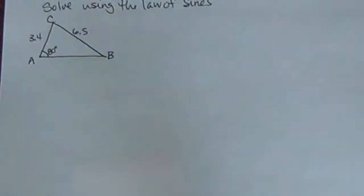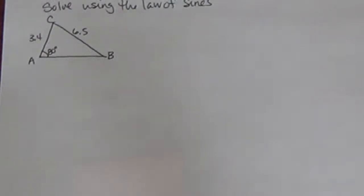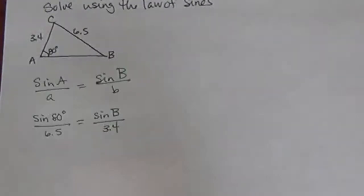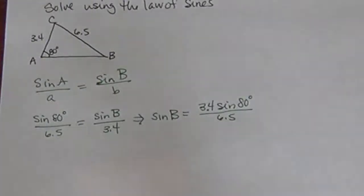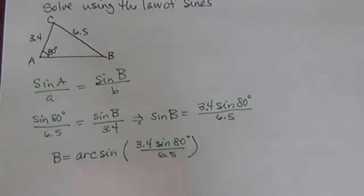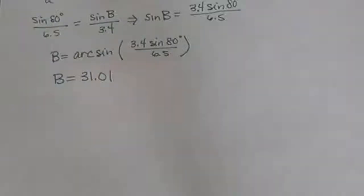Let's look at another example. In this case, we have triangle ABC where angle A is 80 degrees, side length b is 3.4, and side length a is 6.5. We want to solve the triangle. Because I have side a and angle A, I can use that proportion to find angle B. So the sine of B equals 3.4 times the sine of 80 degrees divided by 6.5. Taking the arc sine of both sides, we get angle B approximately equal to 31.01 degrees.